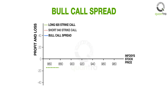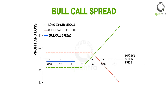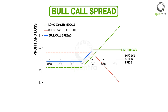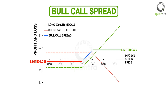A combination of the payoffs of the long call with strike price 920 and the short call with strike price 940 is the payoff of a bull call spread, shown in blue. In summary, a bull call spread is a limited gain and a limited loss strategy. The choice of strike price is a matter of balancing risk-reward and the probability of price crossing the breakeven point.